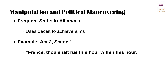John's political maneuvering is another key aspect of his character. He frequently shifts alliances and uses deceit to achieve his aims. His ability to manipulate others is evident in his dealings with France, the English nobility, and even the papacy. In Act 2, Scene 1, John negotiates with Philip of France: "Thou shalt rule this hour within this hour." John's negotiation tactics reveal his strategic thinking and willingness to use threats and promises to manipulate political outcomes.